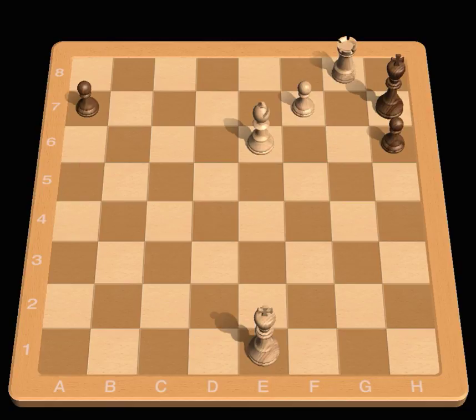However, in some situations, a player may choose to promote his pawn to a piece other than a queen. This is called under-promotion. In this setup, when white's pawn reaches f8, he chooses to promote it to a knight, thereby achieving checkmate.